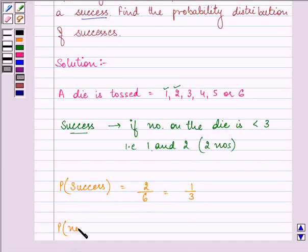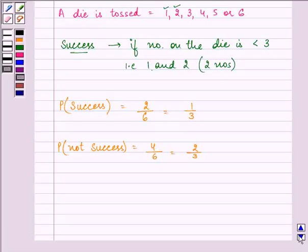So probability that a success will not occur will be equal to if other 4 numbers appear on the top of the die out of 6. So, it is equal to 2 by 3. Right, now here we need to find out the probability distribution of successes.